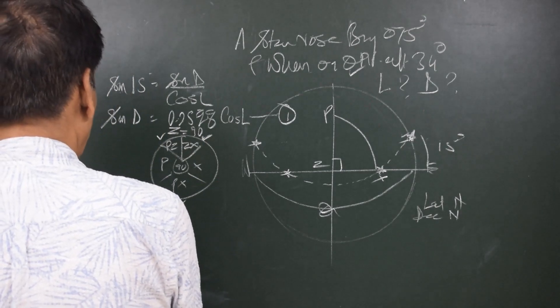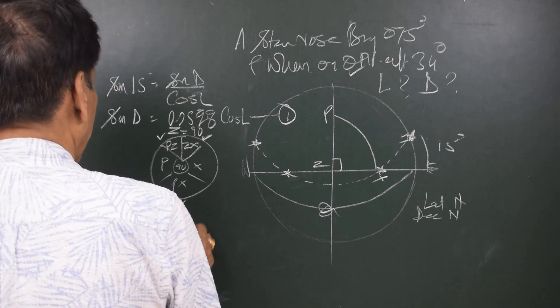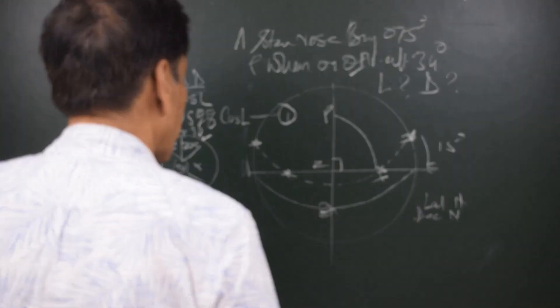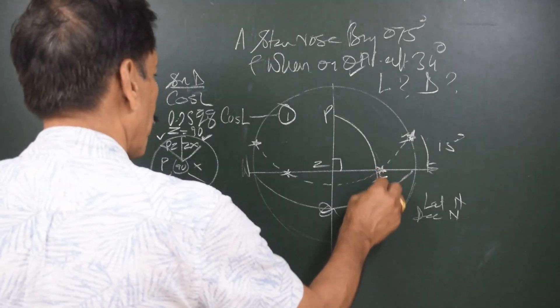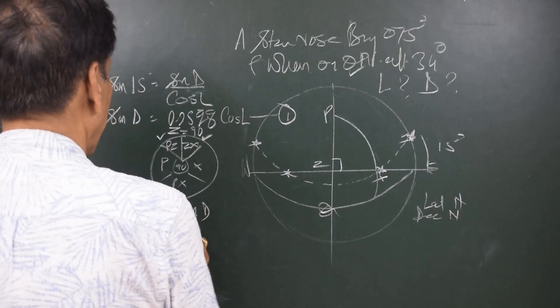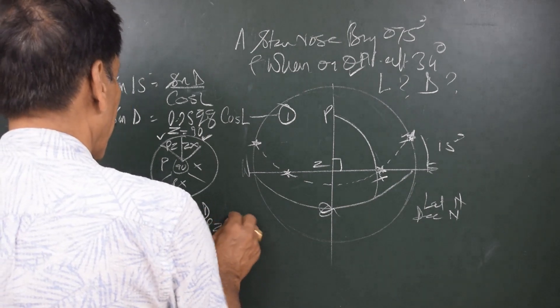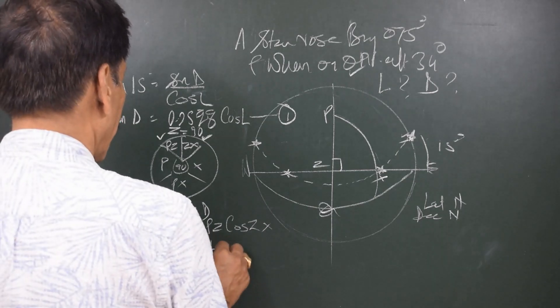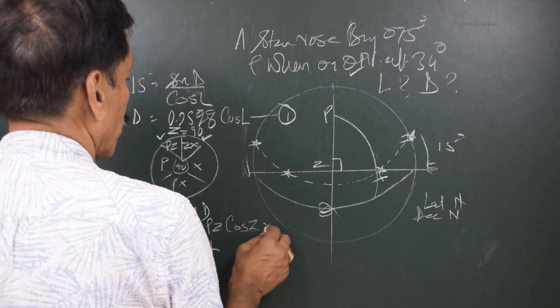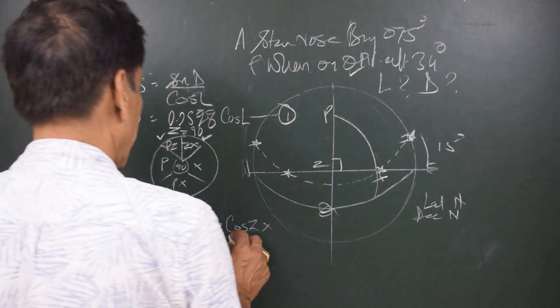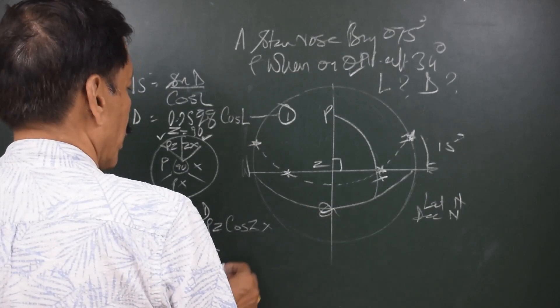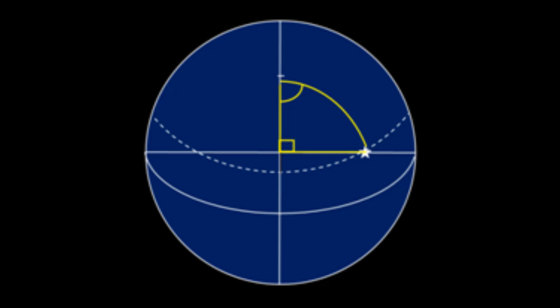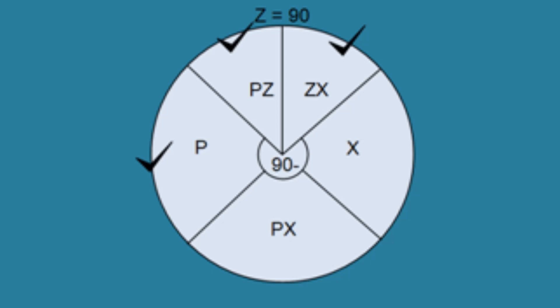So, we have sin of middle part, sin of 90 minus PX. This can be written as sin D, because you can see 90 minus PX. PX is this and 90 minus PX would be the declination. This is equal to sin D, is equal to cos PZ cos ZX. This can be written as sin latitude and cos ZX. We know the zenith distance as 90 minus 34, so 56 degrees.